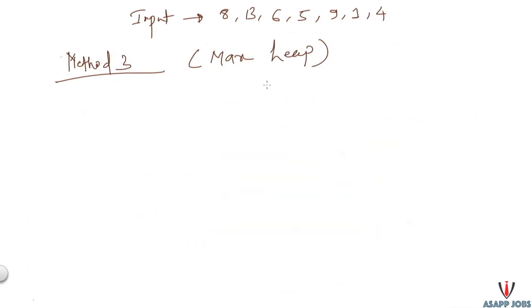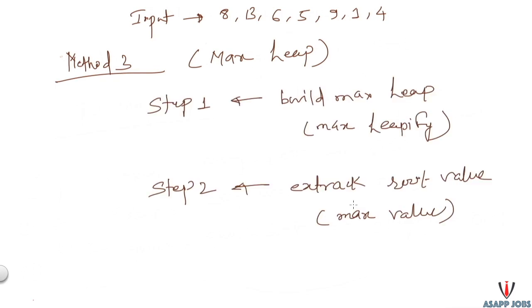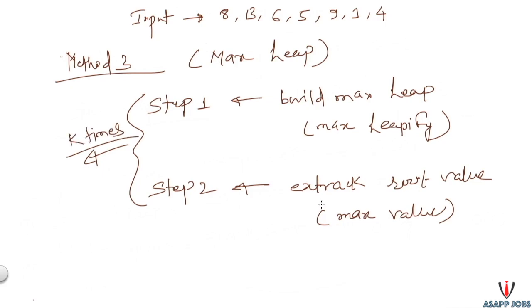Now let's look at the third method: the max heap method. We follow two steps. First, we build a max heap using the heapify algorithm. Second, we extract the root value — since this is a max heap, the root always holds the maximum element. We repeat these two steps k times, and at the kth extraction, the value we return is our kth largest element.